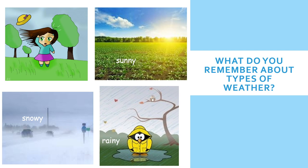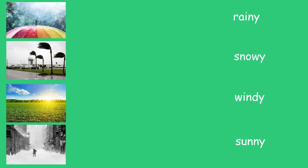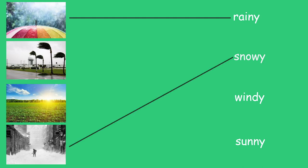Good job remembering all the weather words. Now let's try to match the words to the pictures about weather. The first word says rainy — match the word rainy to the picture that shows it's rainy outside. Now let's try snowy. It is snowy outside today. And the next word says windy. And the last word says sunny — point to the picture that shows it is sunny outside.